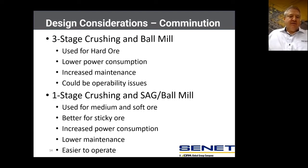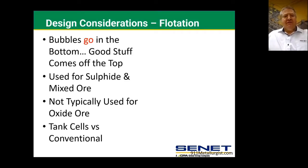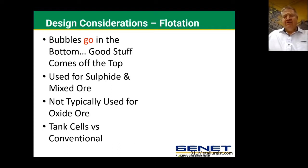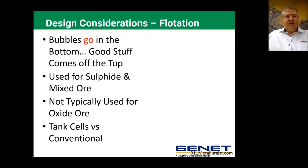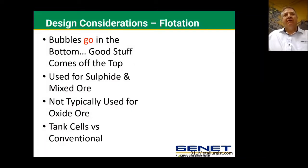The SAG mill is better suited for medium to soft ore and much stickier ore. Moving on to flotation — bubbles in the bottom, good stuff comes off the top. It's usually used for sulfide and mixed ore. We don't typically use it for oxide ore — although on bench scale in the laboratory the recoveries look fantastic, in full scale it's often really difficult and you struggle to get your recoveries and grades. Most plants that have put in oxide ore tend to move back to whole ore leach.